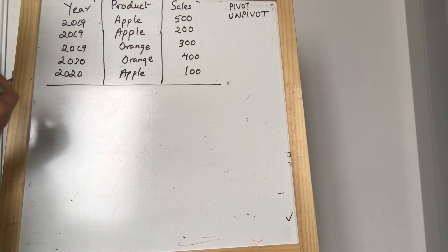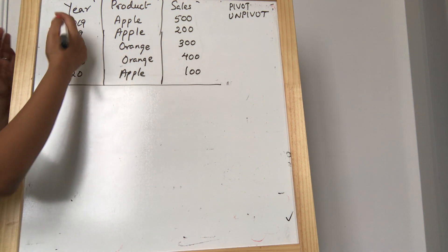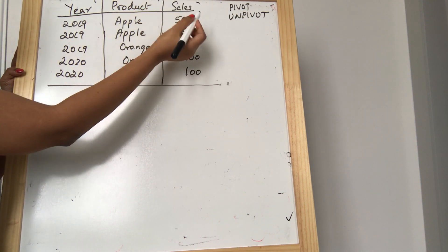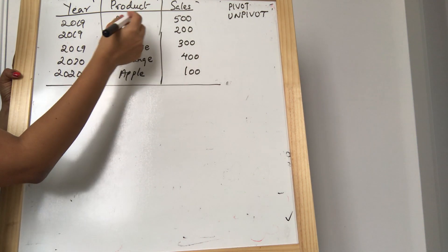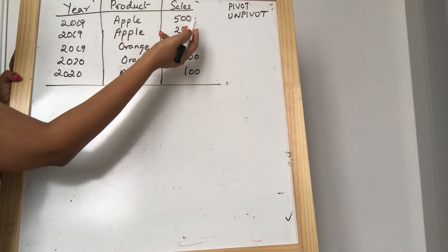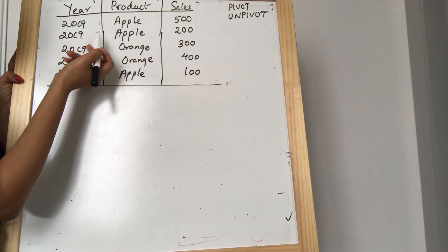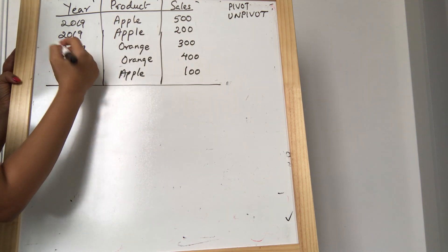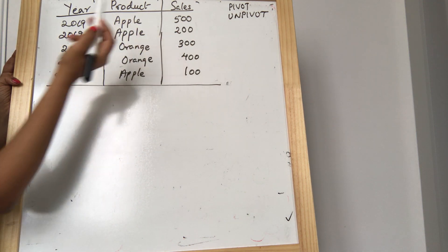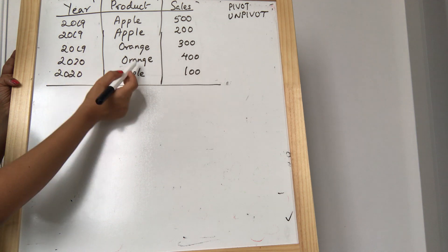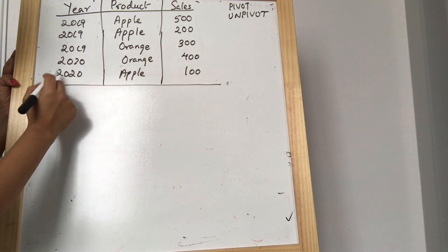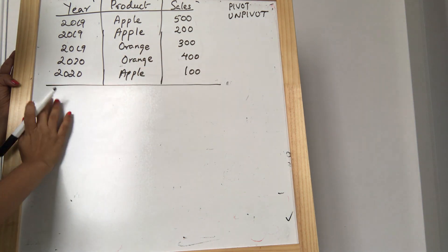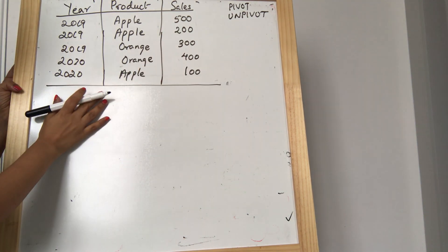I will explain through an example. I have a table here with column names: year, product, and sales. In 2019 I sold apple for 500 rupees, and again in 2019 I sold another batch of apple for 200 rupees. In 2019 I sold orange for 300 rupees. In 2020 I sold orange for 400 rupees, and in 2020 I sold apple for 100 rupees. So I have a table like this.